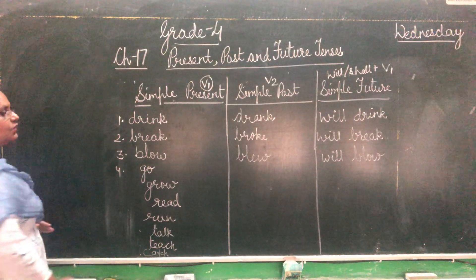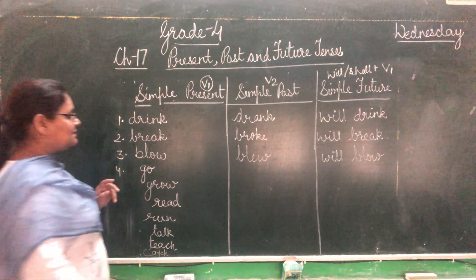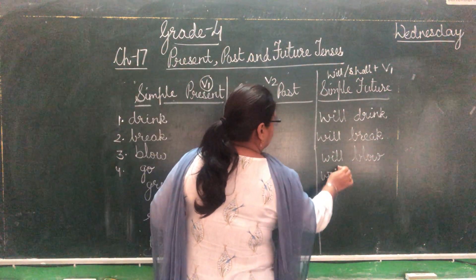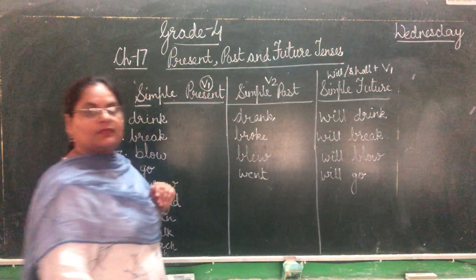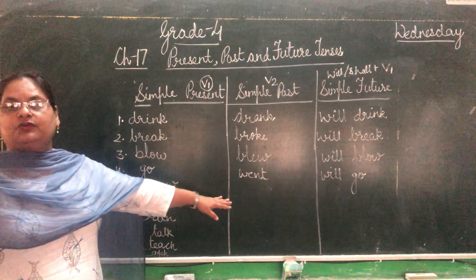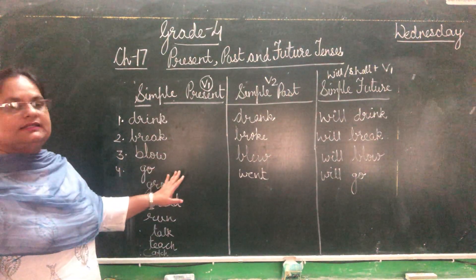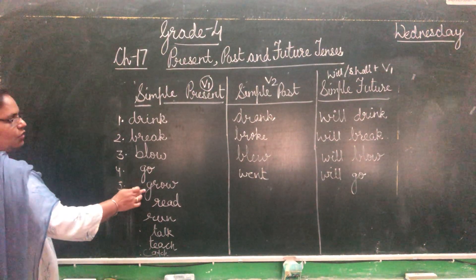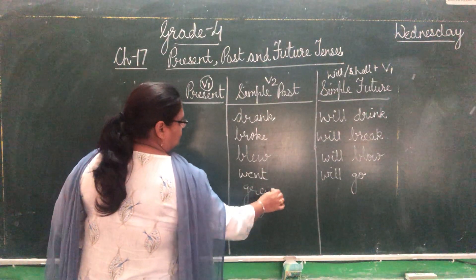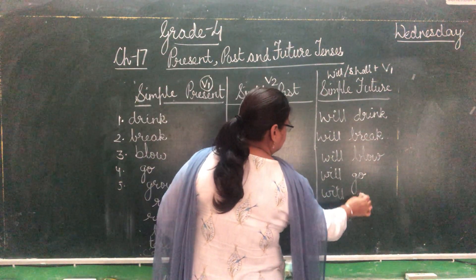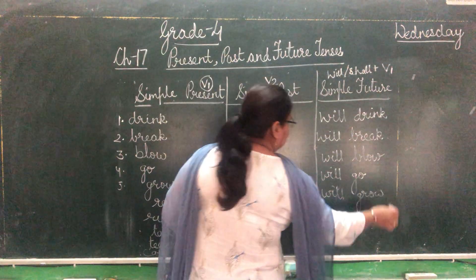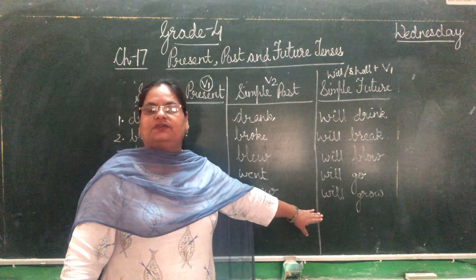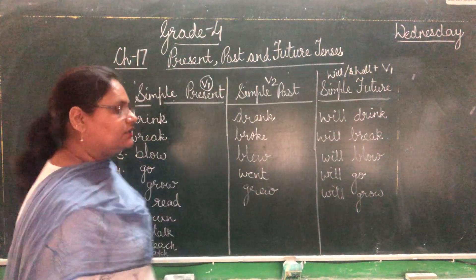Fourth is go. Past tense of go is went, and future is will go. While mam is writing these, all of you make different sentences with these verbs in your notebook. Next is grow, grew, will grow. For example: if you water the plants daily, they will grow properly — or they will grow fast.